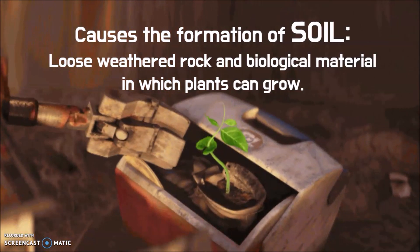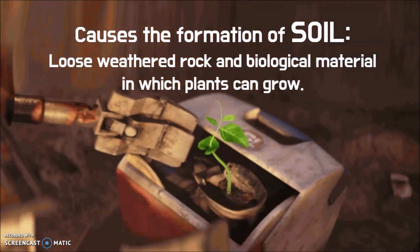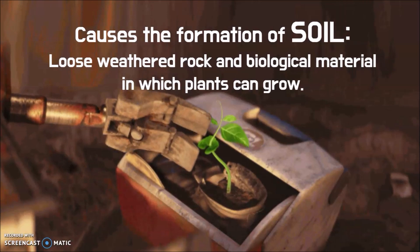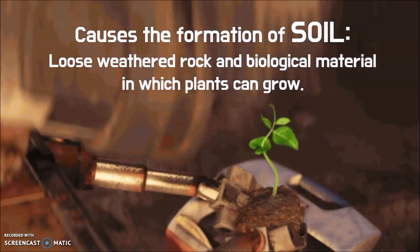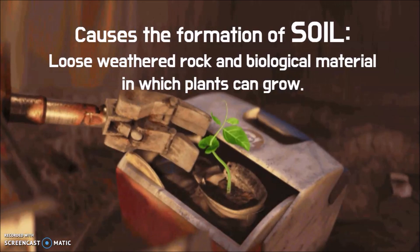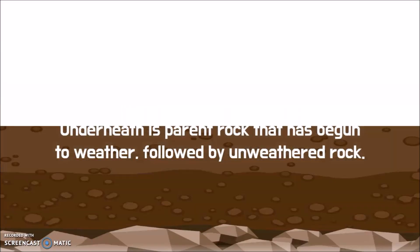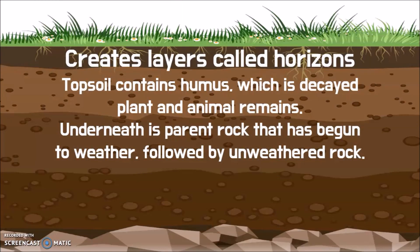All of this leads to the formation of soil, which is loose weathered rock mixed with biological material — something that was once alive — in which plants can then grow. As soil develops it's going to form different layers which are called horizons. Topsoil, which is the top darkest layer, contains humus, which is decayed plant and animal remains. Underneath that are different layers, and the bottom one is going to be the original rock that began to weather, followed by unweathered rock.